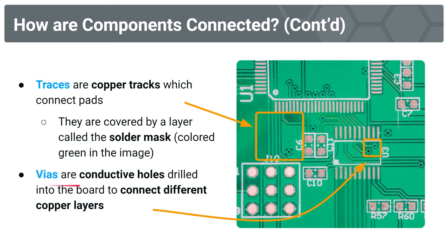We also have vias. How do we get from one layer of the PCB to the next? Because a PCB is made of multiple conductive and insulating layers. So if we have multiple copper layers, how do we get from one copper layer to the next? We can put traces on each of these copper layers, and we do so through vias — conductive holes drilled into the board which can connect those different copper layers.